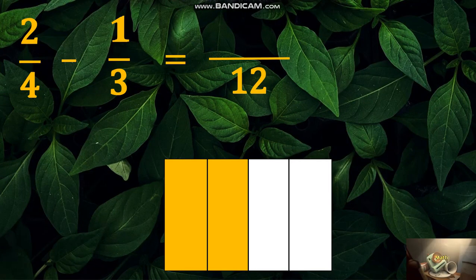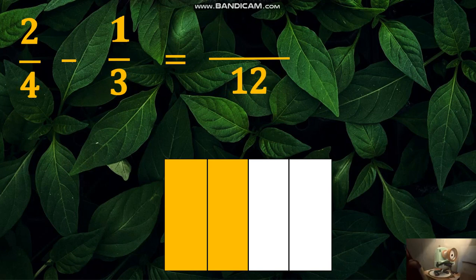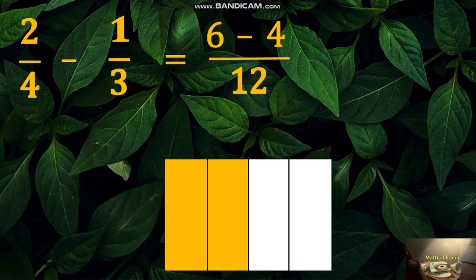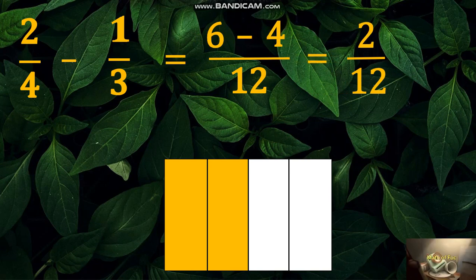Let's have another example of subtracting dissimilar fractions. The first step: find the LCD of 4 and 3, which is 12. Divide 12 by 4, times 2, equals 6. Write the subtraction sign. Next, 12 divided by 3, times 1, equals 4. Copy the common denominator 12. Now subtract the numerators: 6 minus 4 equals 2. We got a difference of two twelfths, which reduces to the lowest term as one sixth.